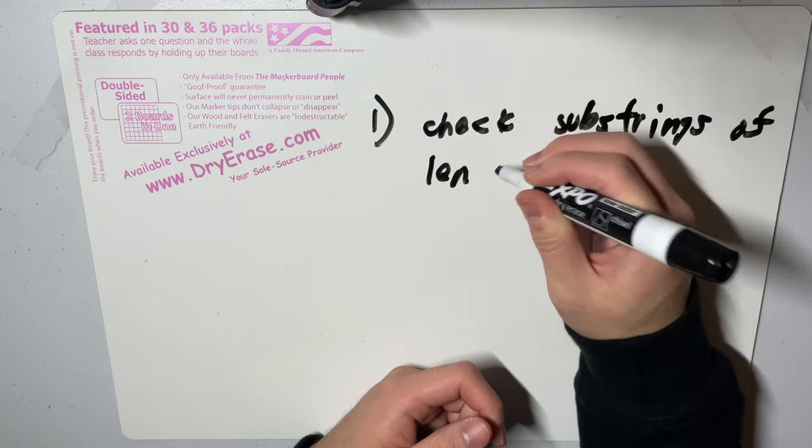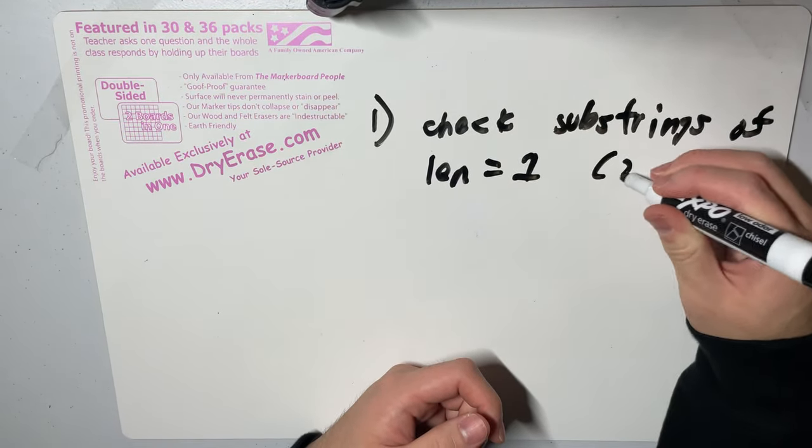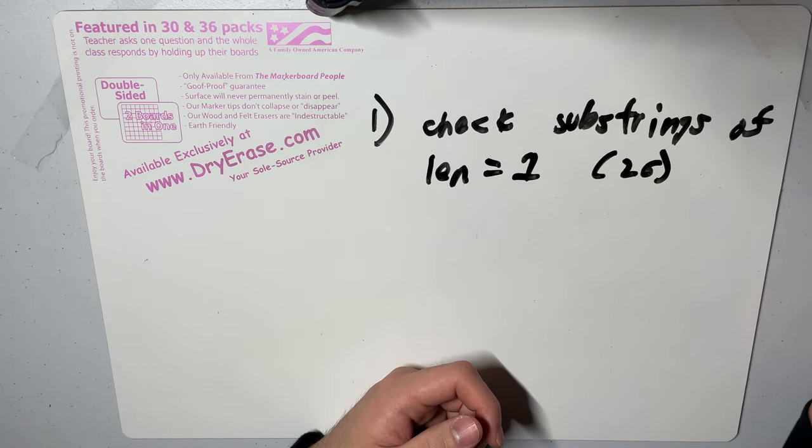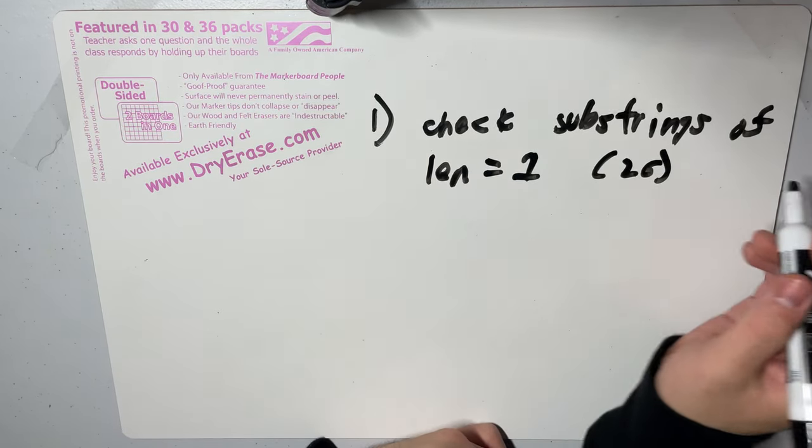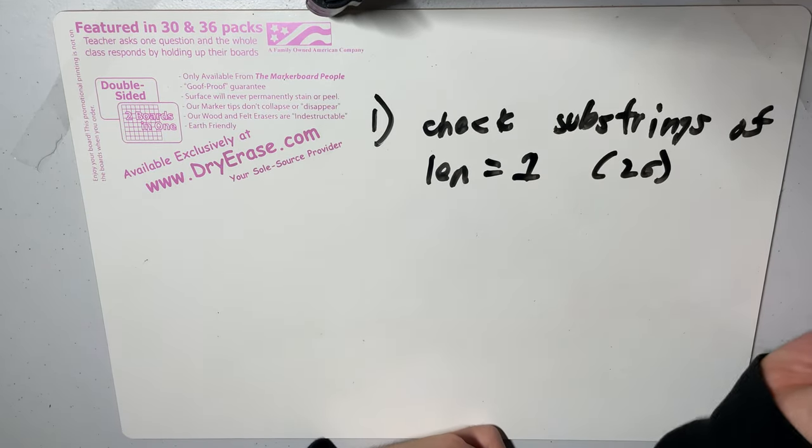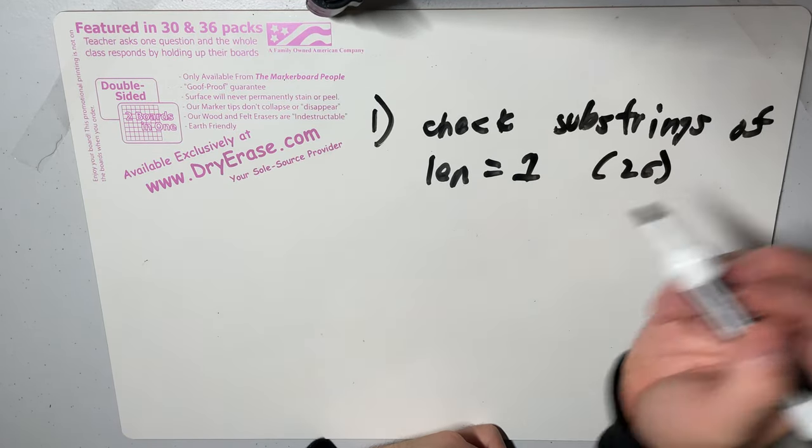And so there's only 26 of them, because there's 26 characters in the alphabet. If we find that one of these characters doesn't appear in our input, then we find the smallest one and that's our answer.